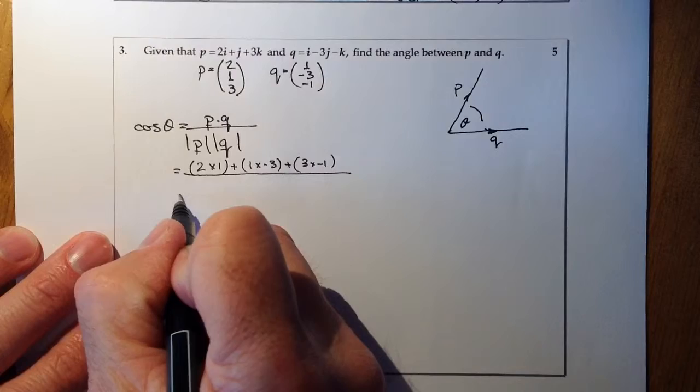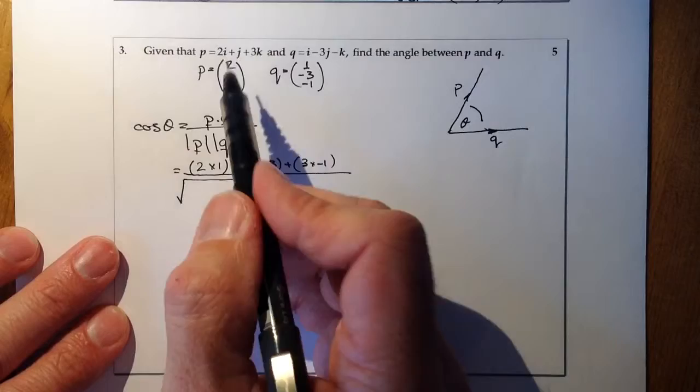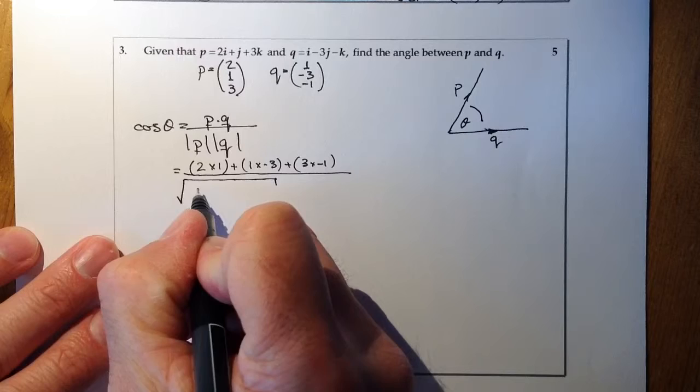On the denominator, what we're going to do is we're going to take the magnitude of P, which will be 2, 1, and 3. What we'll do is I'll square them and add them together.